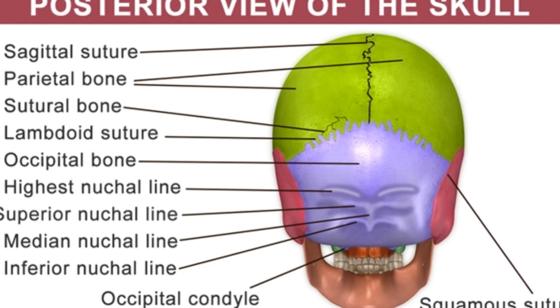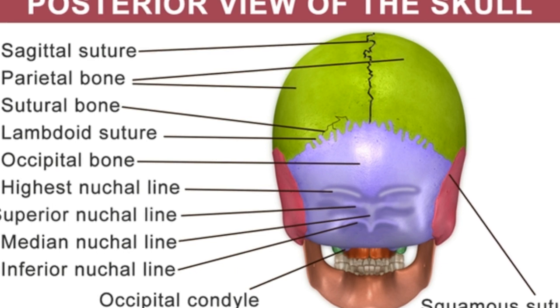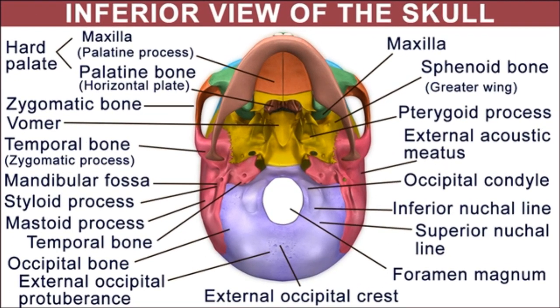The occipital bone is located at the lower section of the back of the skull. It is convex externally and concave internally. It is divided into four regions. These four regions surround the foramen magnum, which is a large hole located at the center of the occipital bone. The four regions integral to the occipital bone anatomy include the basilar part, the exo-occipital or condylar sections, and the squamous part.